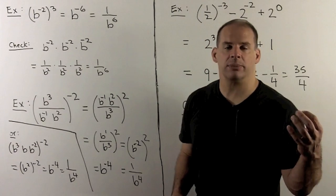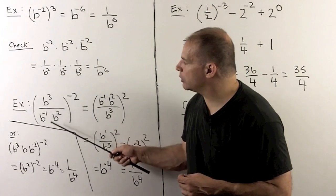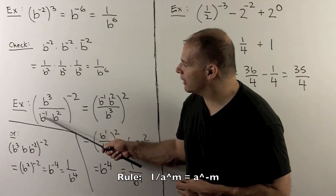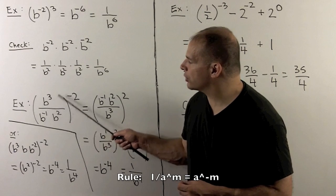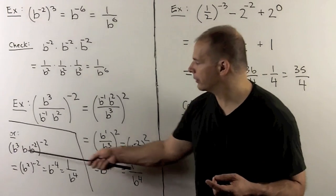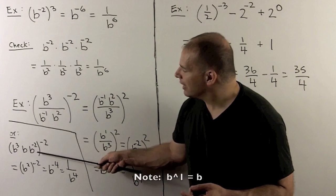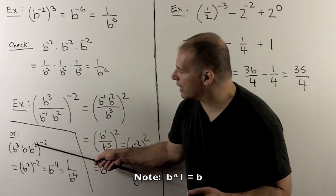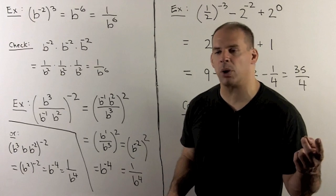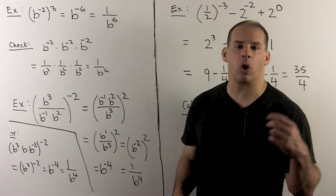To check using order of operations, we do what's in the parentheses first: b cubed over b to the minus 1 times b squared. Move the denominator terms to the numerator — b inverse goes to numerator as b, and b squared goes to numerator as b to the minus 2. Using the like-base multiplication rule, we get 3 plus 1 plus minus 2 for the exponent, giving b squared. Raising to the minus 2 and multiplying exponents gives b to the minus 4, or 1 over b to the 4th, which agrees with our previous work.